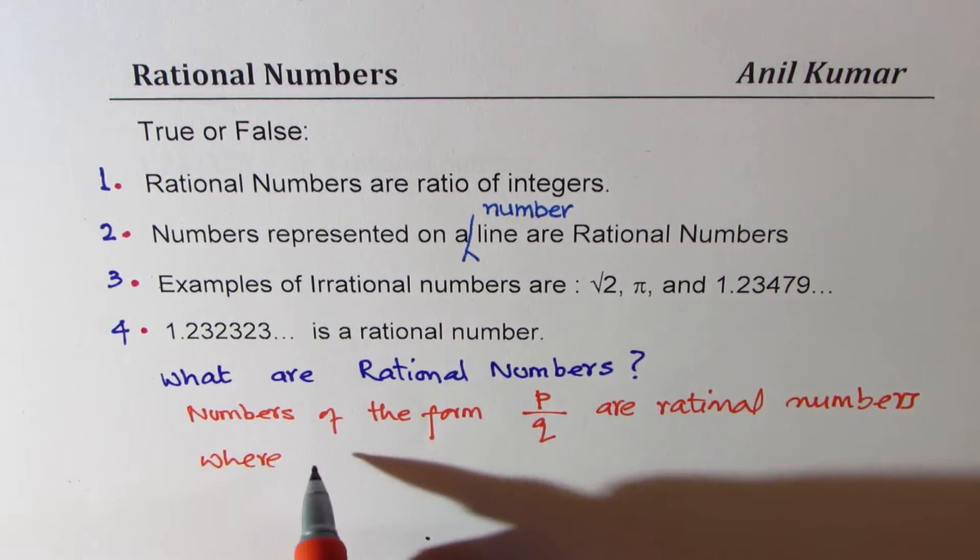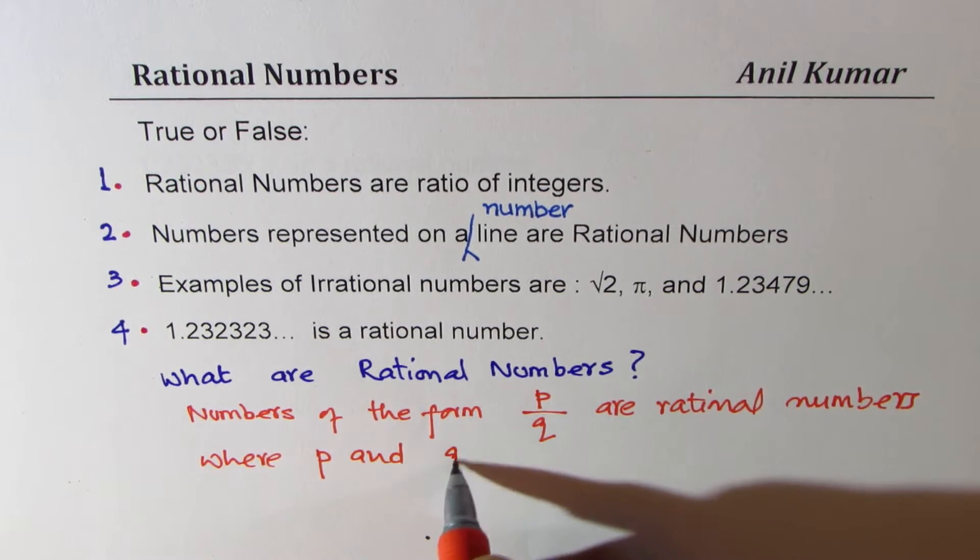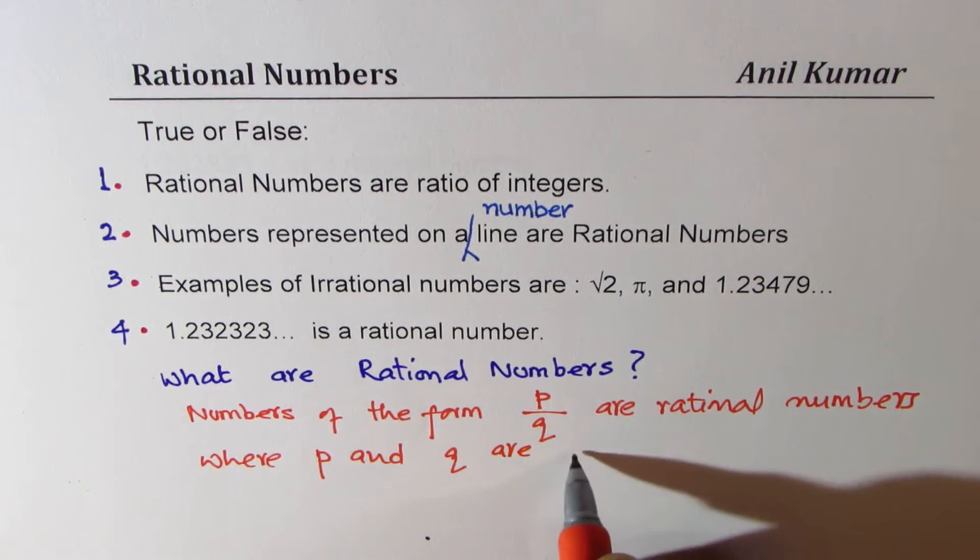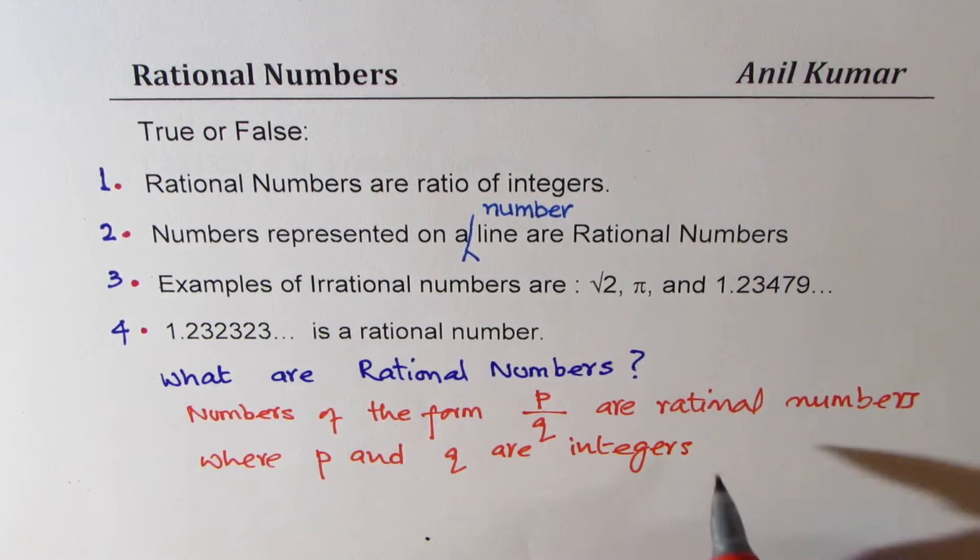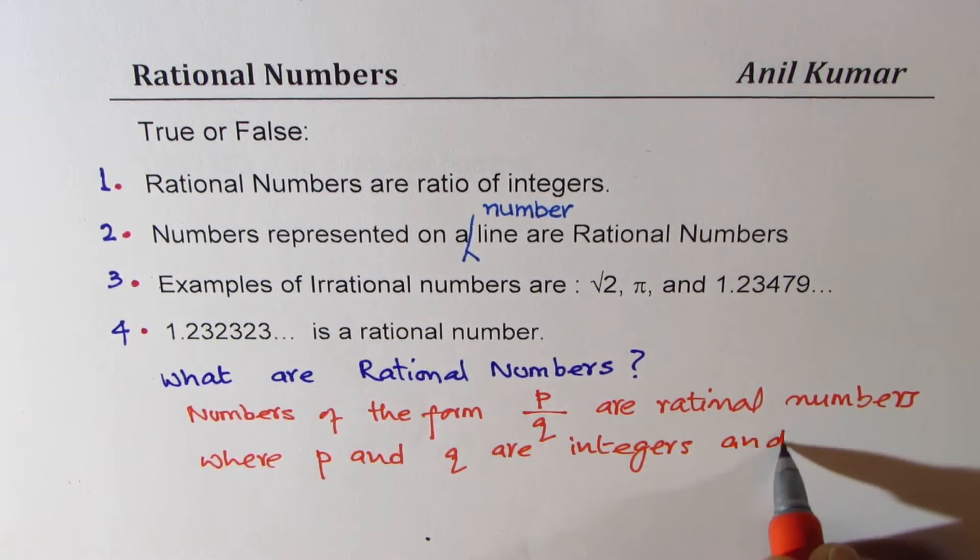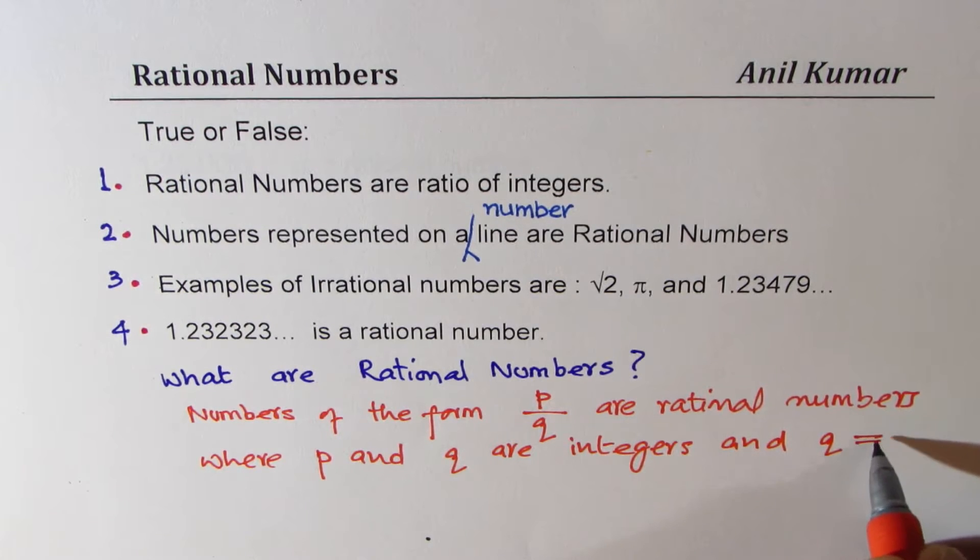Where P and Q are integers, and Q is not equal to 0. So that is the basic definition of rational numbers.